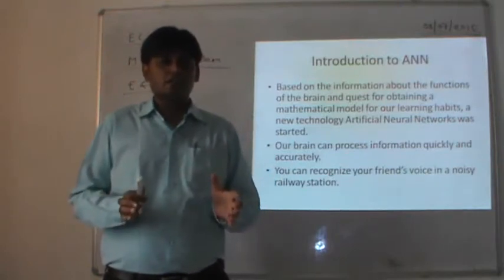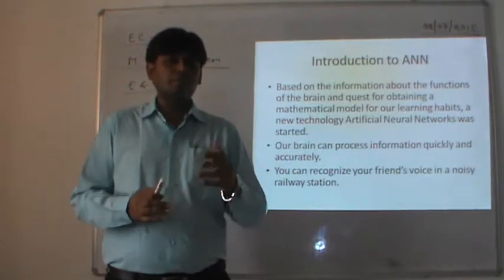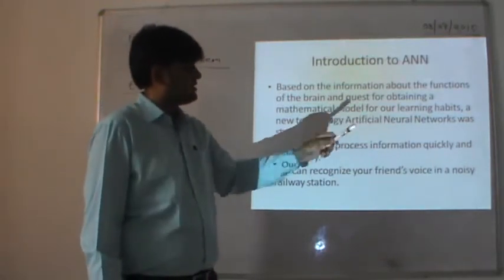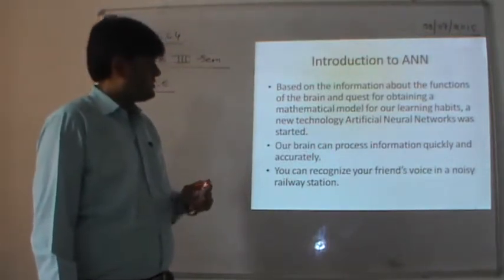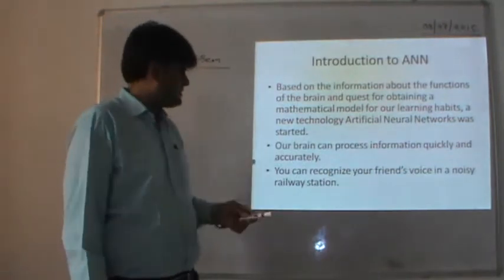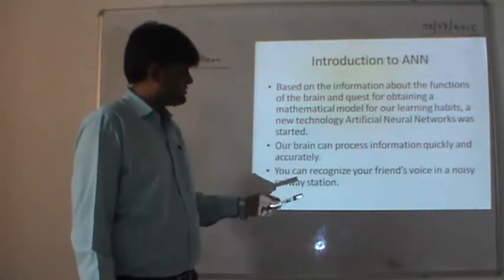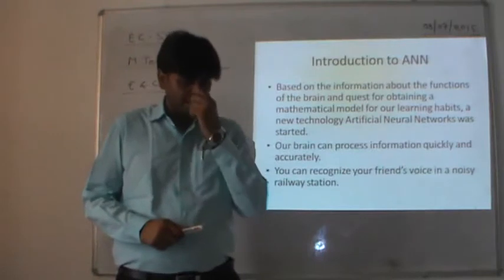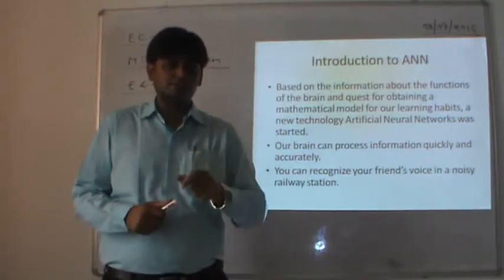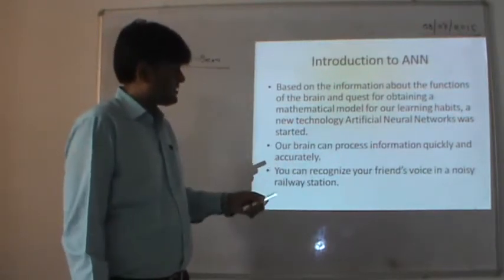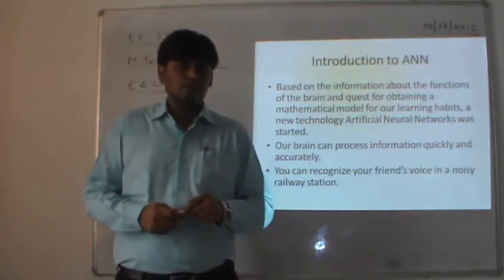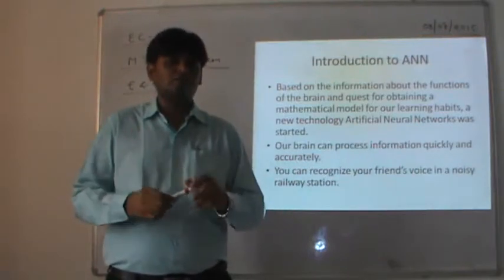Initially, for the development of a processing machine and to mimic the human brain, Artificial Neural Networks was started. Our brain can process information quickly and accurately. For example, you can recognize your friend's voice in a noisy radio station. If we consider our brain as a recognition system, it can manage to recognize a familiar voice in a moment of time along with the associated noise.